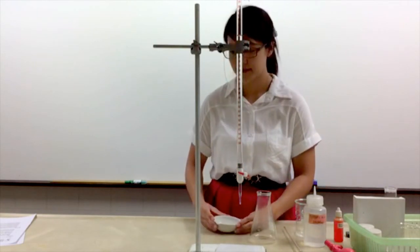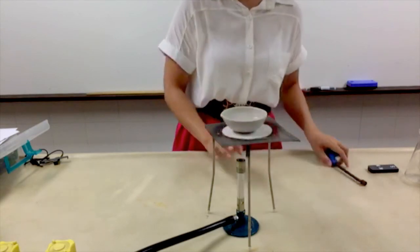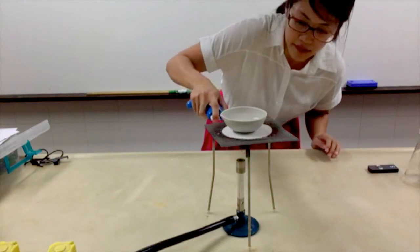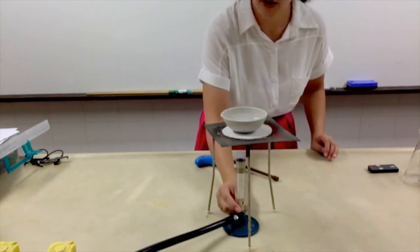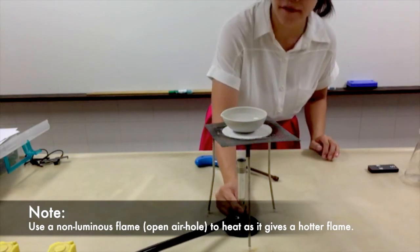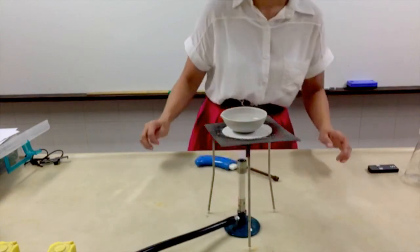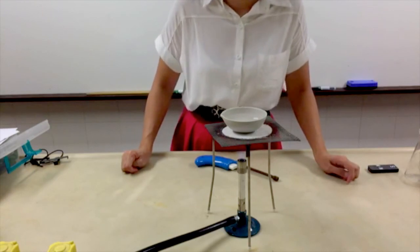Then we will evaporate our solution to dryness and let's see what will happen when we put this on the Bunsen burner. I place my evaporating dish on top of the Bunsen burner and I turn on my fire. Make sure that it is an open air hole because an open air hole gives a hotter flame.